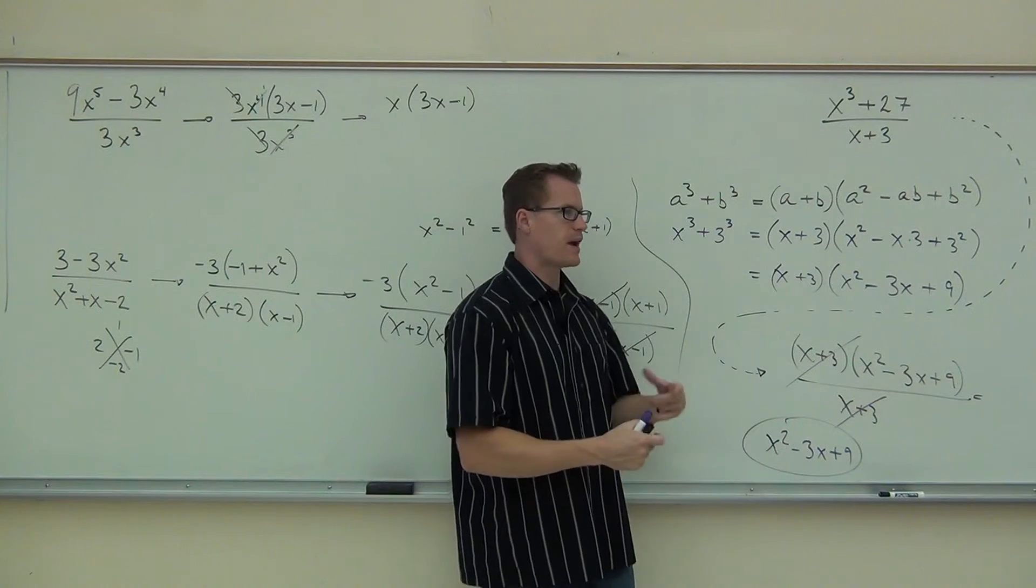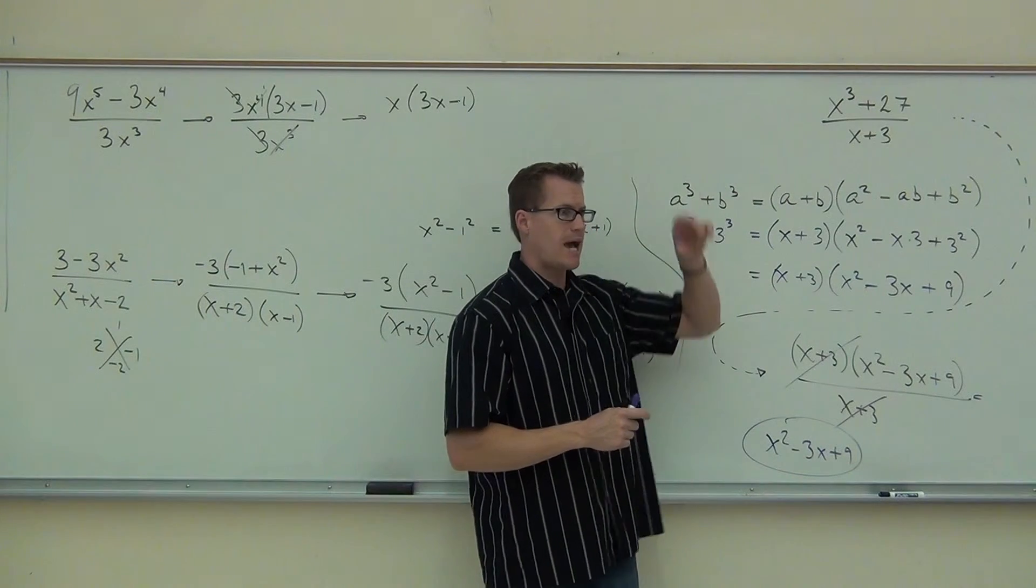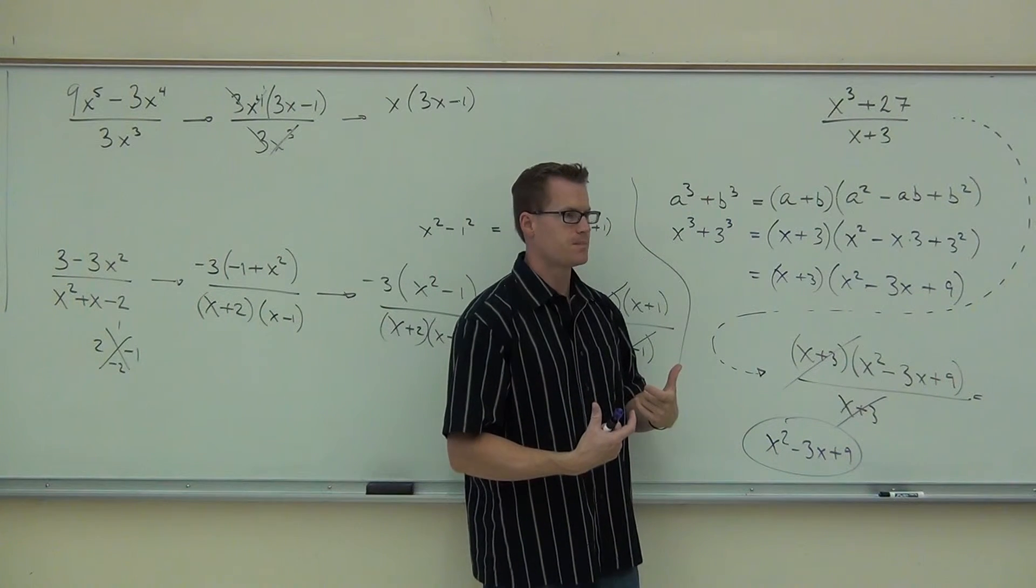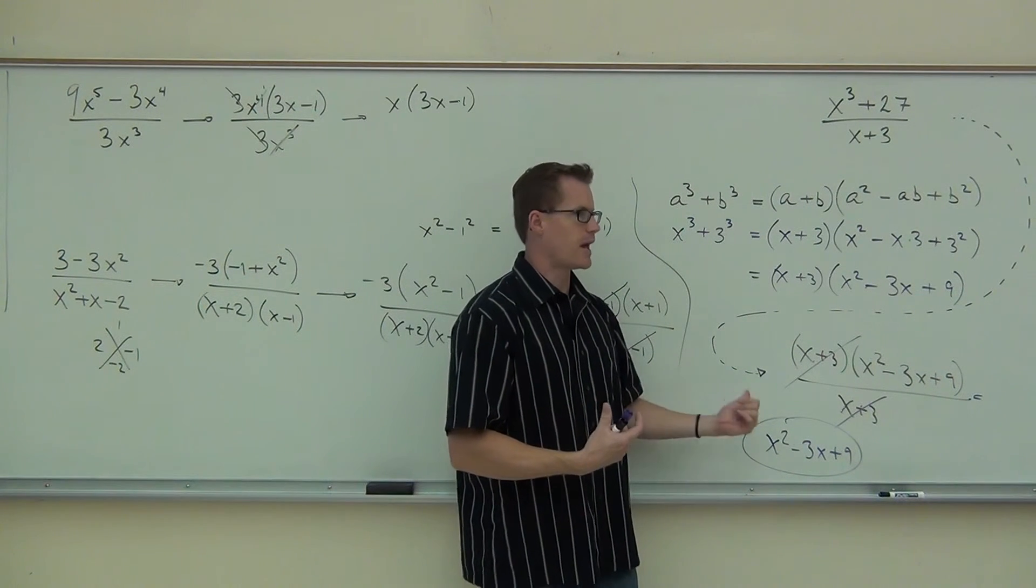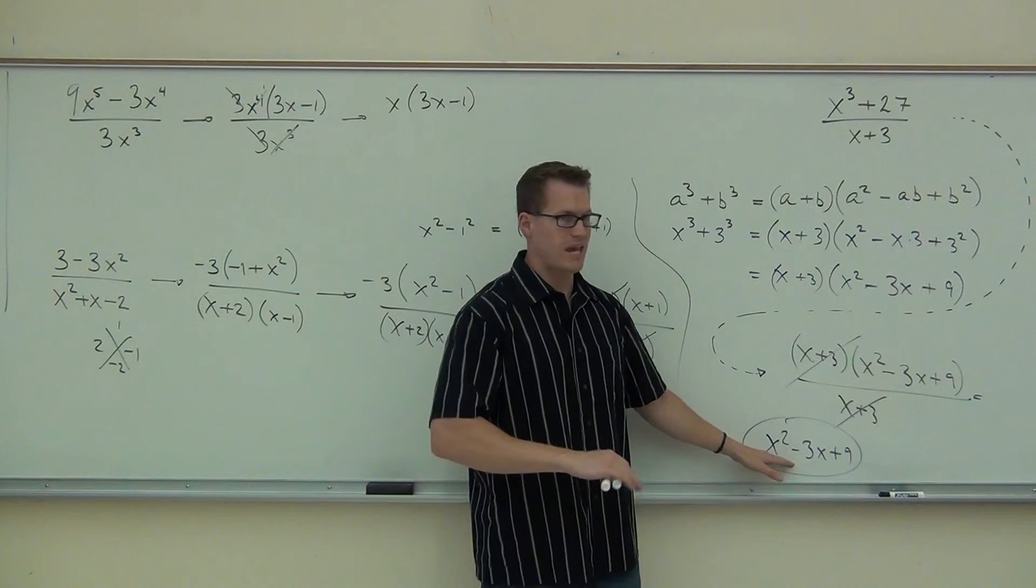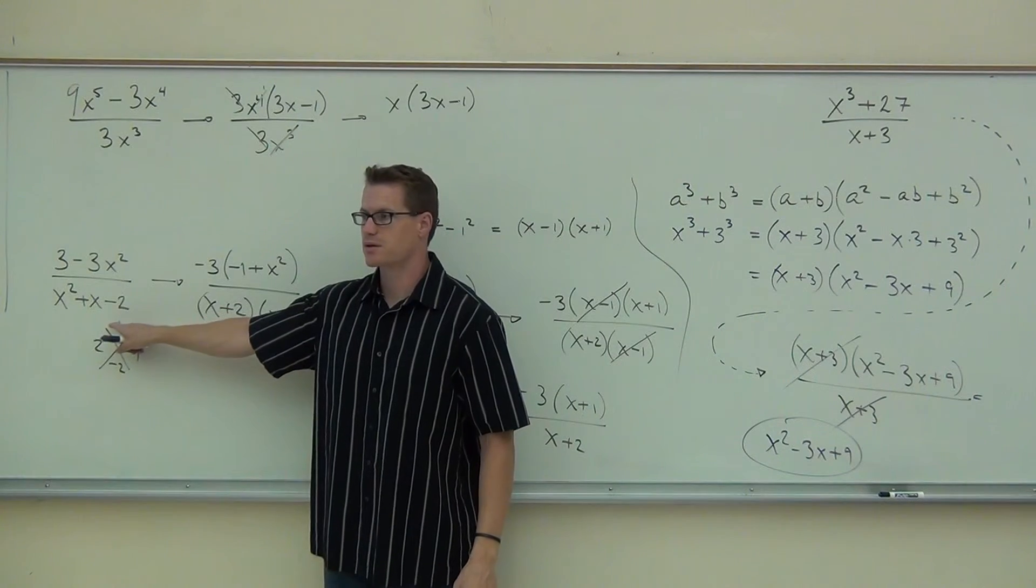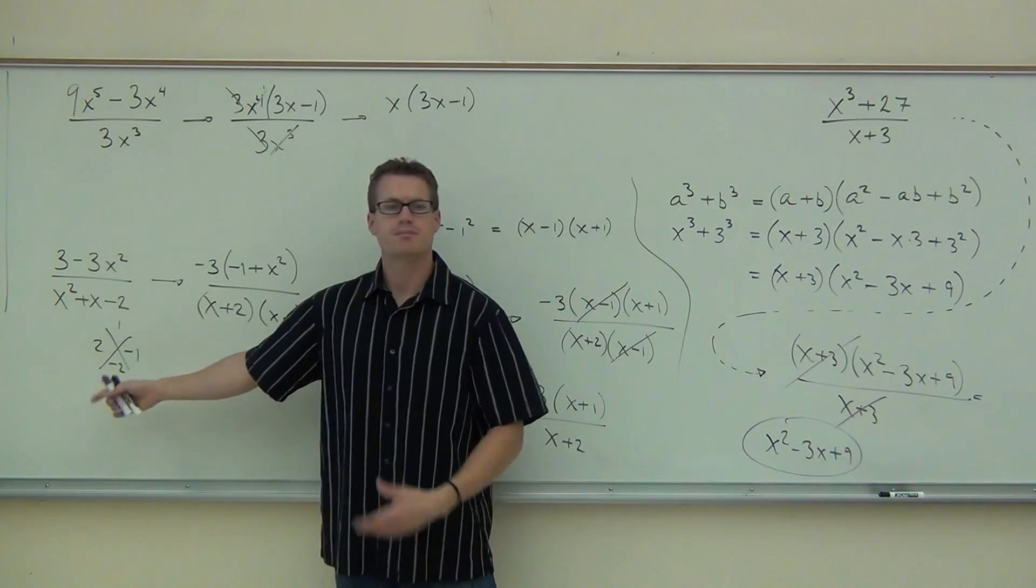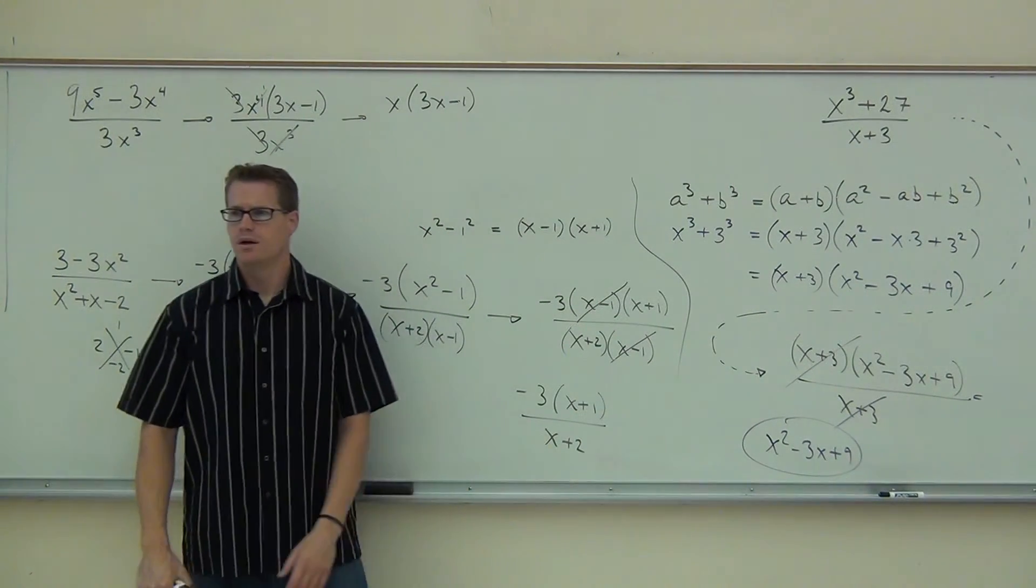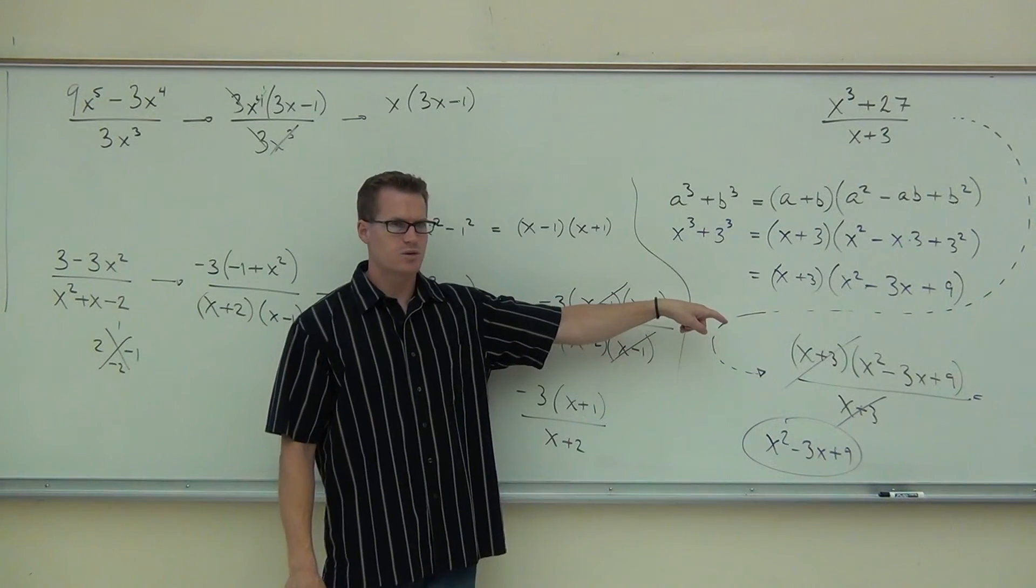So our answer is x² - 3x + 9. Of course that would be over 1, but the 1 doesn't matter, so we're just going to leave it like this. Can you factor it even more? Well you can try it, right? That would be a diamond problem. But what you're thinking of is two numbers that add to negative 3 and multiply to positive 9. The only things I can think of that multiply to 9 are like 3 and 3, or 9 and 1, and none of those are going to add to negative 3. So you can't factor it anymore. This is one of the three-term polynomials that you can't factor. Not all of them you can.